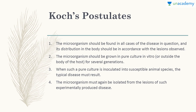There was a scientist Robert Koch who gave postulates of infectious diseases — four main postulates. First, the microorganism should be found in all cases of the disease and its distribution in the body should be in accordance with the lesions observed. Second, the organism should be grown in pure culture in vitro for several generations. Third, when such a pure culture is inoculated into a susceptible animal, the typical disease must result. Fourth, the microorganism must again be isolated from the lesions of the experimentally produced disease.